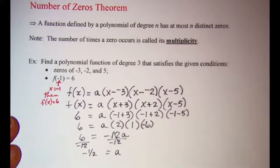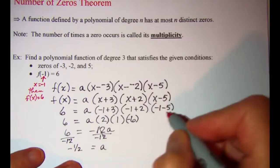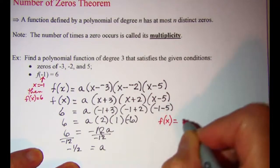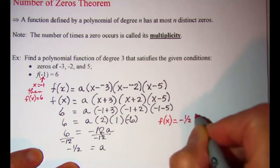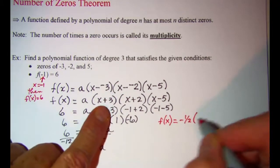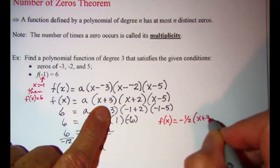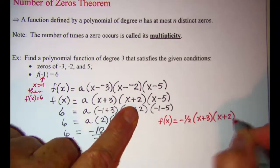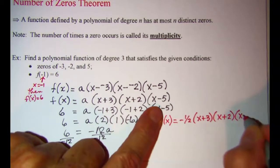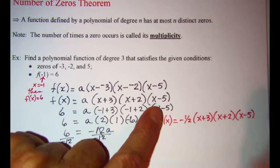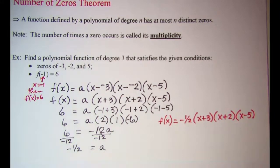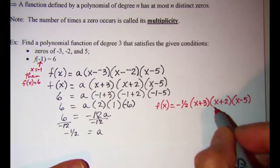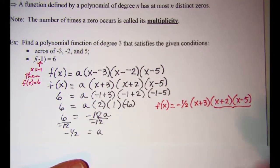So my function can be written as f of x equals negative one-half times x plus 3, times x plus 2, times x minus 5. Now normally we multiply these out, so let's go ahead and multiply the last two binomials first.